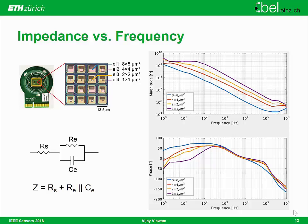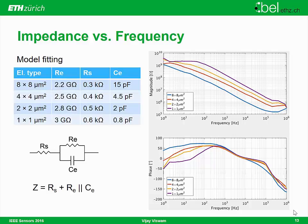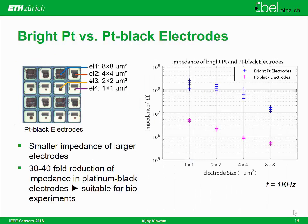At high frequency, the response is mainly dominated by the parasitic resistance and trace resistance of the system. We can fit the data with a model and extract the equivalent parasitic capacitance. As you can see, the electrode resistance is very high in the low-frequency range, which can create large thermal noise and affect bio-measurements. Therefore, we used platinum-black electrochemical deposition, which decreases the electrode impedance substantially by 30 to 40 times, and this substantially reduces the noise, making it suitable for bio-measurements.